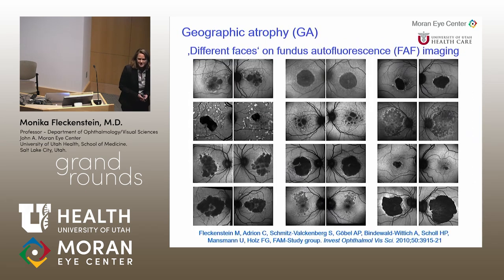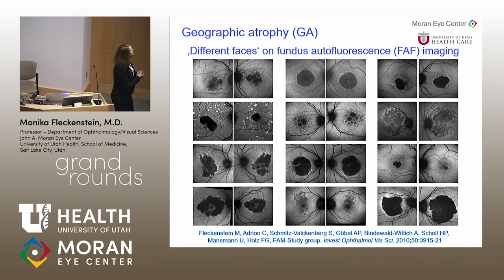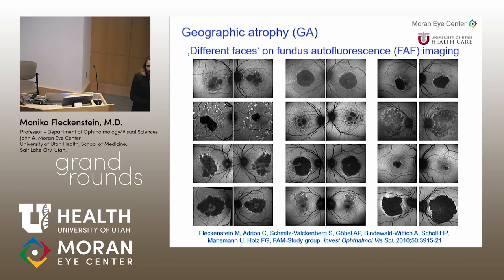I'm still fascinated by the different faces of geographic atrophy visualized by fundus autofluorescence imaging. What is fascinating is the high degree of symmetry between the right and left eye in patients — not only in the shape of the lesion but also in the pattern surrounding the atrophic lesions. It is also fascinating that we have a large variety of different phenotypes in geographic atrophy.